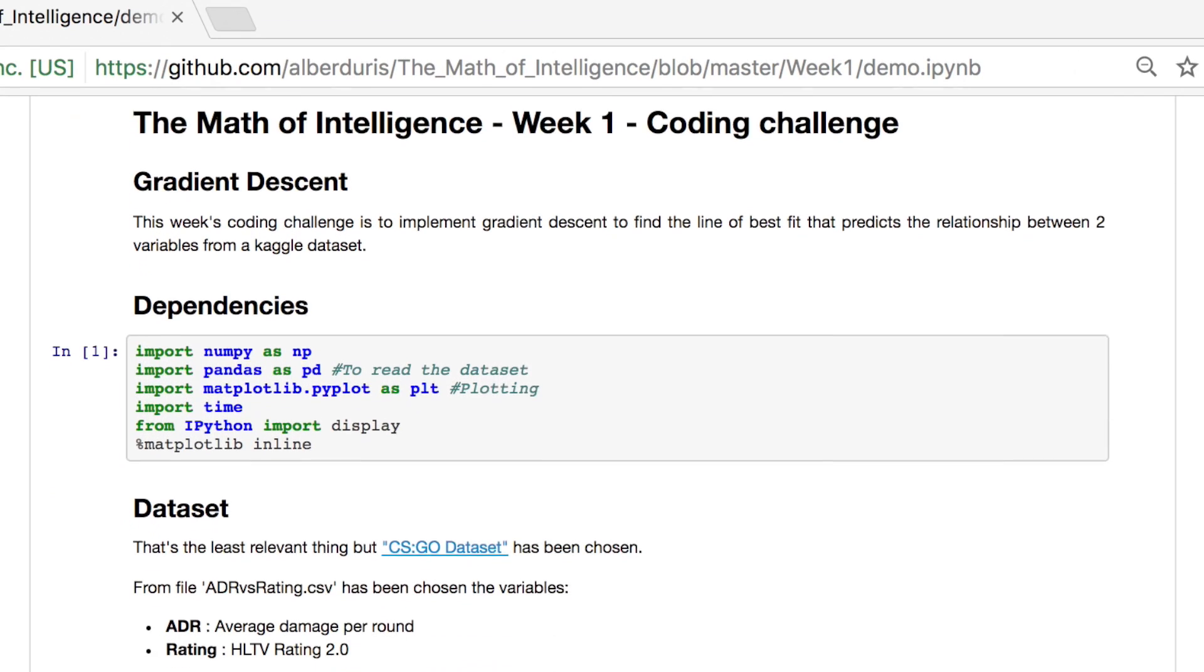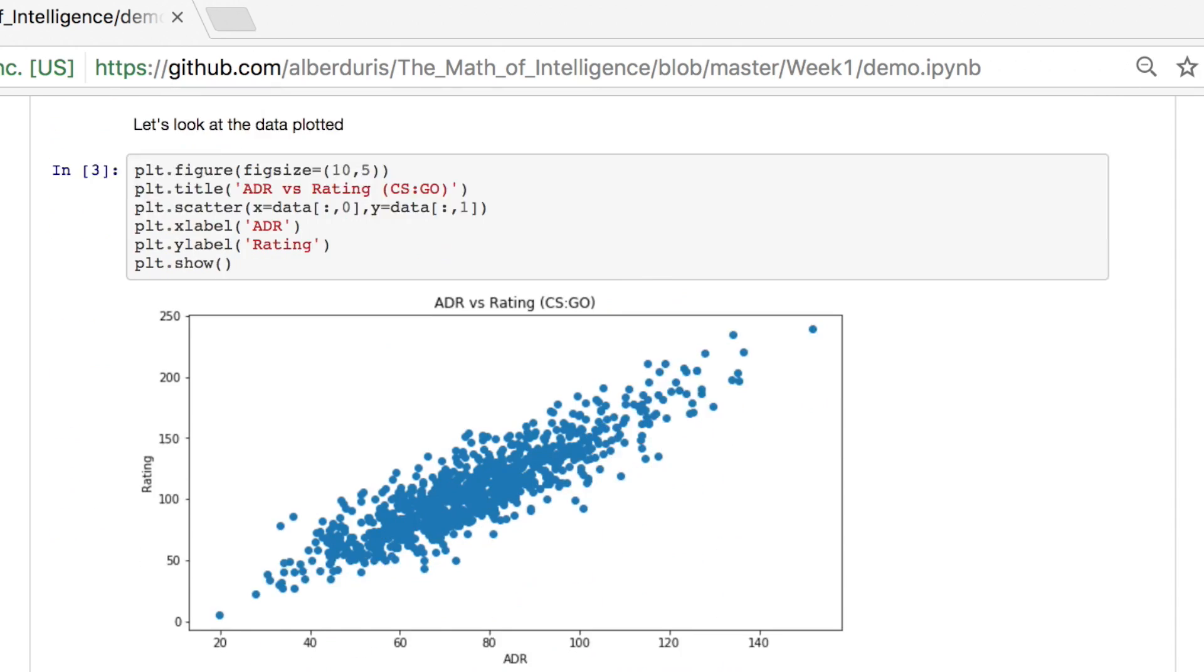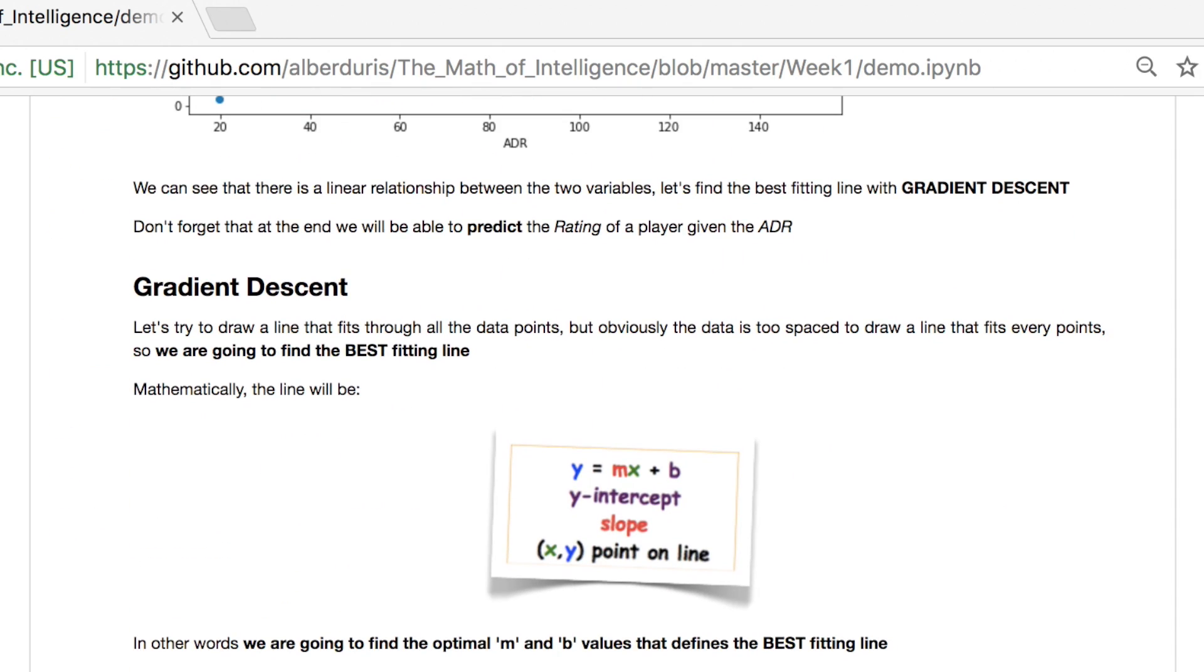Last week's coding challenge winner is Alberto Garcés. Alberto used gradient descent to find the line of best fit. His Jupyter notebook is insanely detailed. You could learn gradient descent just from reading it alone. Very well thought out. That was dope, Alberto. Wizard of the week. And the runner-up is Ivan Gusev, who implemented gradient descent from scratch for polynomials of any order.